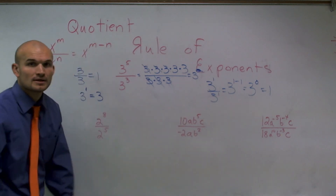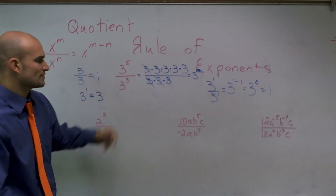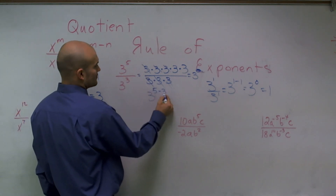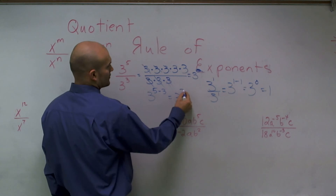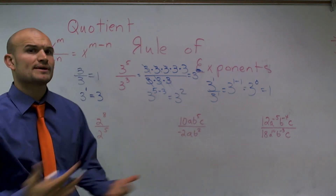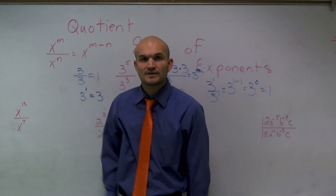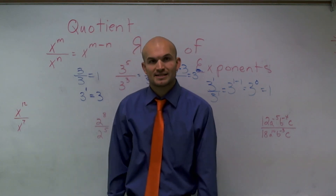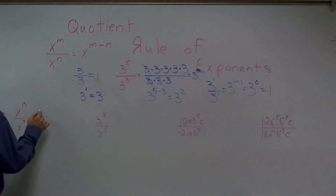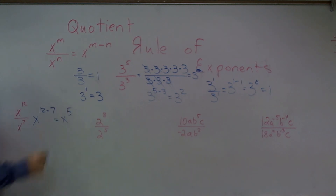So that's really the basics of exponents. You can also say 3 to the 5 minus 3 equals 3 squared. So let's look at how we can apply our quotient rule of exponents. Let's say I have x to the 12 divided by x to the 7. I just rewrite it as x to the 12 minus 7, and therefore my answer is x to the fifth.